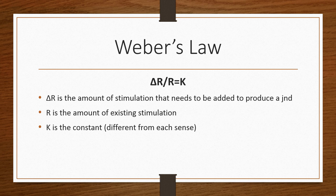Weber's Law is a measure of difference between stimuli. For instance, it can explain why we are less likely to detect the removal of three nuts from a bowl if the bowl is full than if the bowl is nearly empty. The formula for Weber's Law is delta R over R equals K. Delta R is the amount of stimulation that needs to be added to produce a JND. R is the amount of existing stimulation, and K is the constant, which is different for each sense.